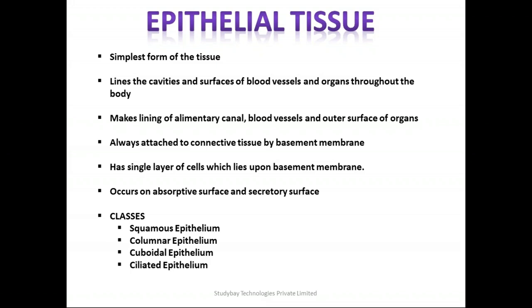Epithelial tissue occurs on absorptive as well as secretory surfaces. Absorptive means it is absorbing something and secretory means it is releasing something — in this case, that something is basically hormones. These epithelial tissues can further be classified into squamous epithelium, columnar epithelium, cuboidal epithelium, and ciliated epithelium.